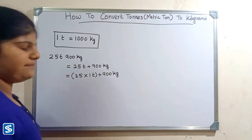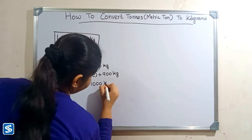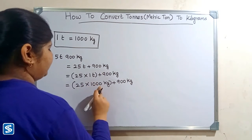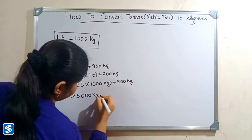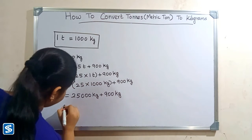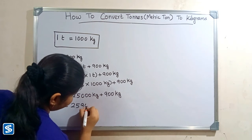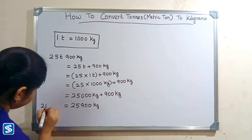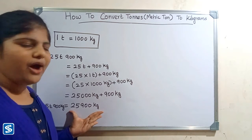Now we substitute one thousand kilograms in place of one ton, so twenty five multiply one thousand kilograms plus nine hundred kilograms. Twenty five multiply one thousand kilograms equals twenty five thousand kilograms. Twenty five thousand kilograms plus nine hundred kilograms equals twenty five thousand nine hundred kilograms. So twenty five tons nine hundred kilograms is equal to 25,900 kilograms.